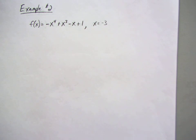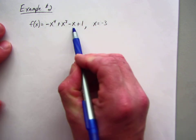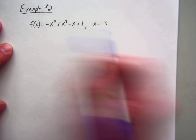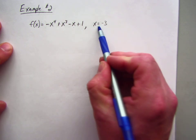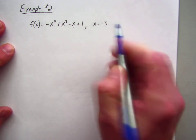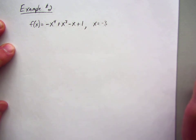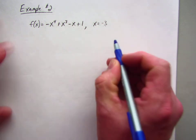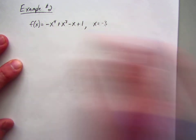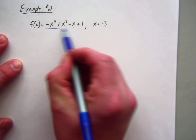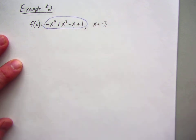Second example, we're going to do f of x equals negative x to the 4th plus x cubed minus x plus 1. And we want to evaluate this function when x equals negative 3. So instead of using direct substitution where I will just plug it in here and then just do order of operations, I will actually use synthetic. Again, make sure this is in standard form, which it is.